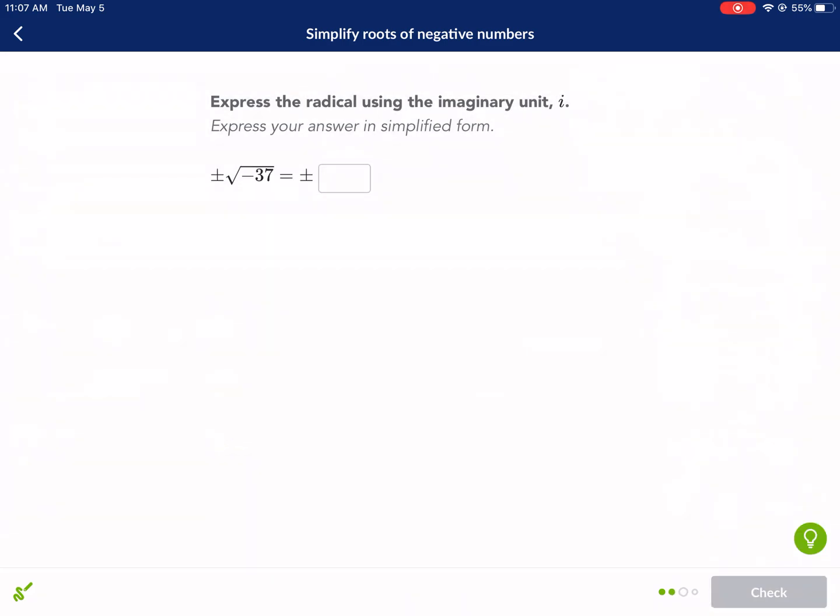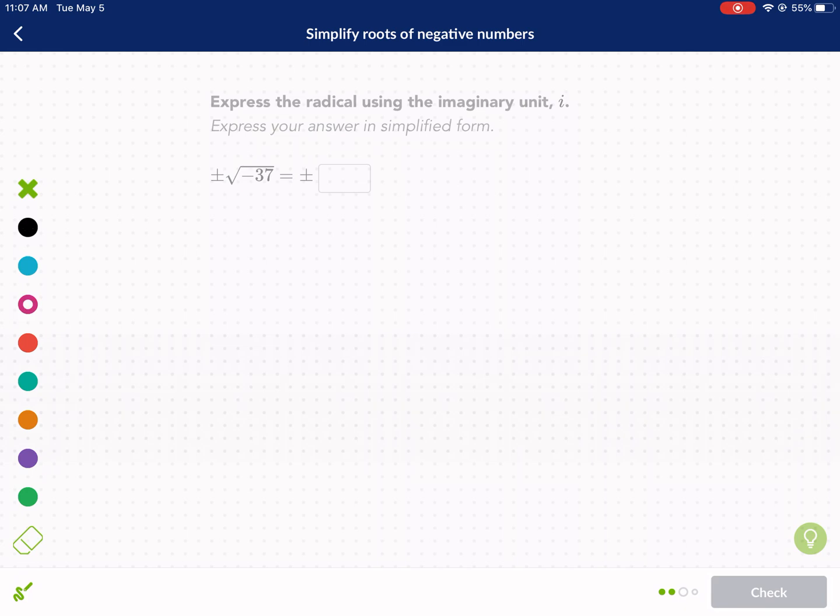Okay, we're moving and grooving on to plus or minus square root of negative 37. Again, we need to separate the i, square root of negative 1, square root of 37, plus or minus. We know that square root of negative 1 is i, plus or minus, and now we have square root of 37.